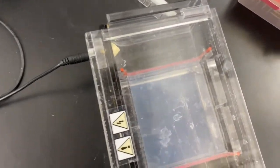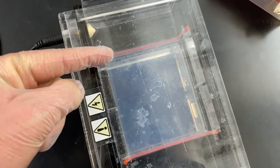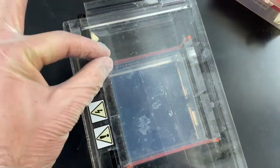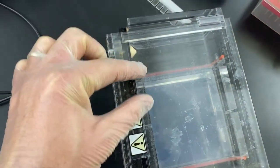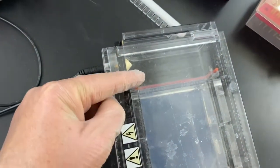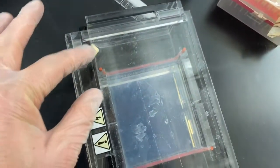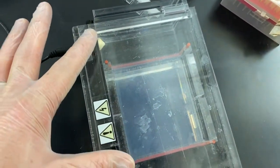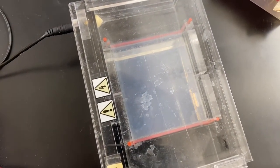So we're going to let this run for a little while. You should see the purple dye is going to continue going down, and we can use that to track the progress. Basically, we want to go at least as far as we need to to have those bands separate out. We'll compare them to the ladder, which will show up in that first lane. And we're going to see everything once we get this under the imaging equipment, which we'll do a little bit later when this is done running.